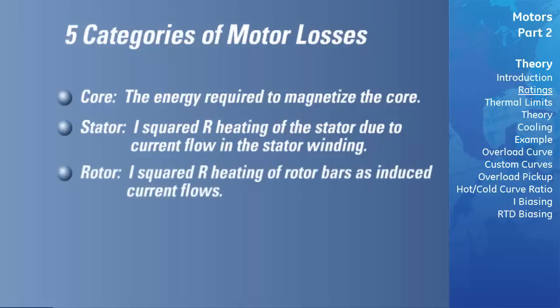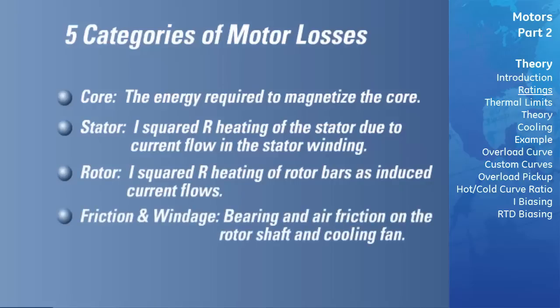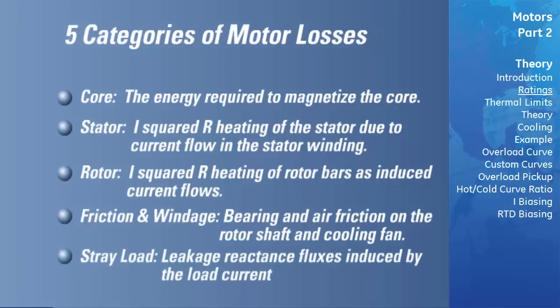Rotor losses are due to the I-squared-R heating of rotor bars as induced current flows. Friction and windage losses are due to bearing and air friction. Stray load losses are due primarily to leakage reactance fluxes induced by the load current. Core, stator, and rotor losses typically make up greater than 80% of the total motor losses.